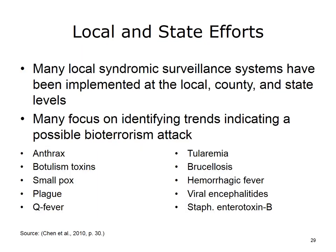While Biosense is one example of a national system, local systems exist as well. In a systematic review of studies reporting on syndromic surveillance systems, Chen et al. identified 20 such systems implemented at the local, county, or state levels. Many of these systems focus on detecting one or more agents that may be used as part of a biological attack on U.S. soil. Some agents that existing local systems screen for include anthrax, tularemia, smallpox, and Q fever, among others.